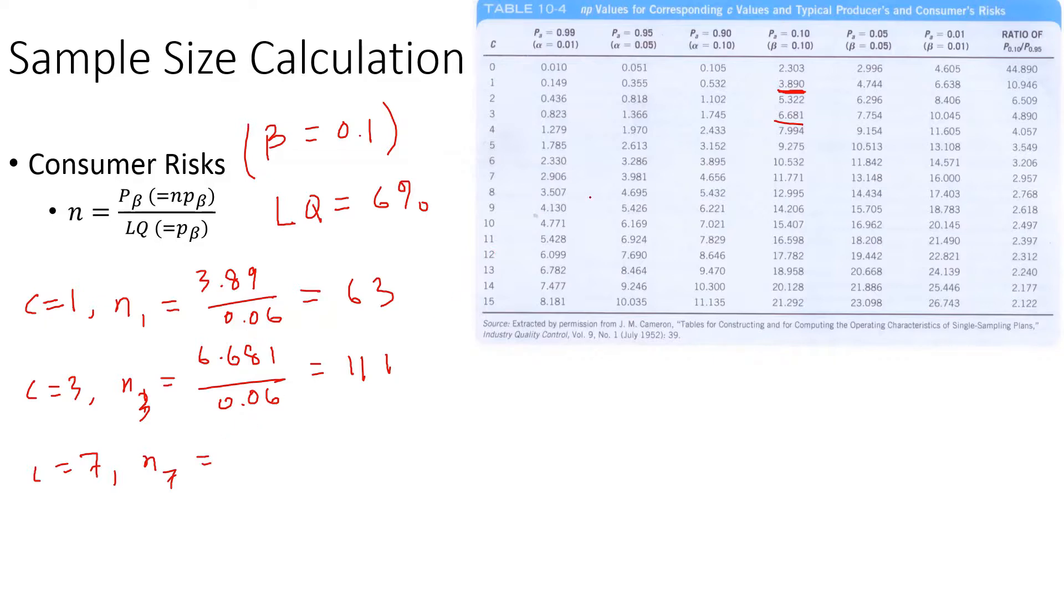For C value 7, the value for that probability or NP value is 11.771 divided by 0.06. If you do this calculation, it's going to be 196.